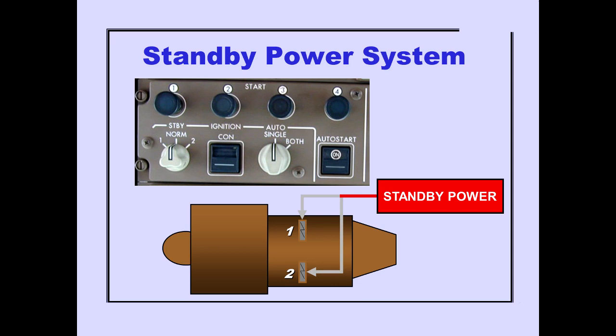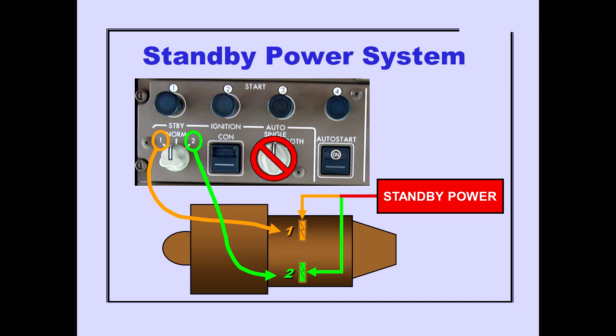Rotating the standby ignition selector to one or two selects the standby power system as the power source for the individual igniter, regardless of auto-ignition selector position. The standby power system supplies power continuously to the igniter.